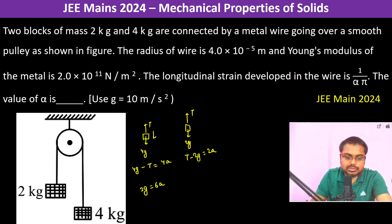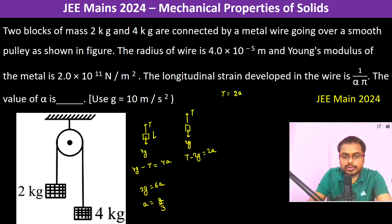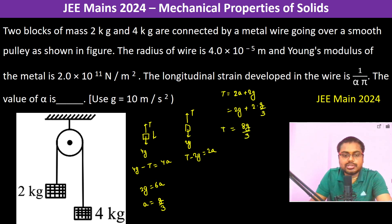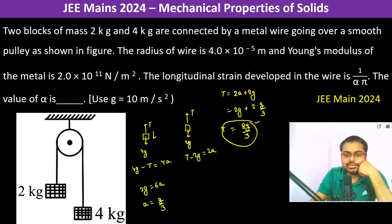So a is equal to g by 3. Now when a equals g by 3, T is equal to 2a plus 2g, which equals 2g plus 2 into (g by 3), giving 8g by 3. So the tension is 8g by 3. Now we find the strain developed.